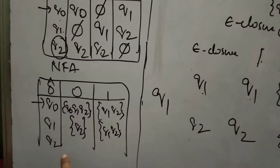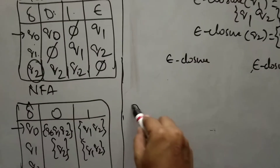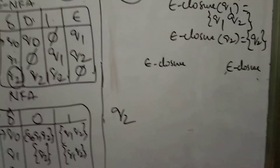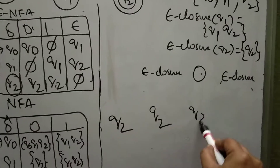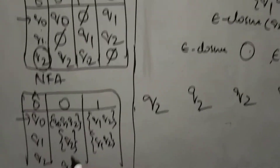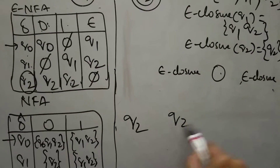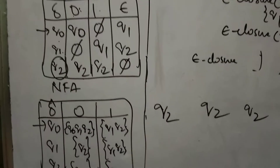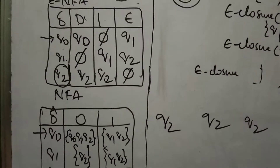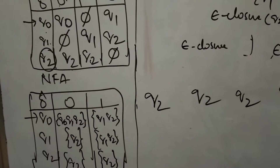Now apply for Q2. Epsilon closure of Q2 is simply Q2. Q2 upon 0: Q2 upon 0 is Q2 and epsilon closure of Q2 is Q2, so the answer is Q2. Q2 upon 1: Q2 upon 1 is Q2 and epsilon closure of Q2 is Q2, so the answer is Q2.